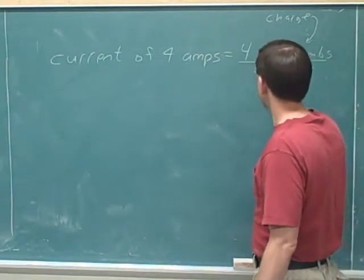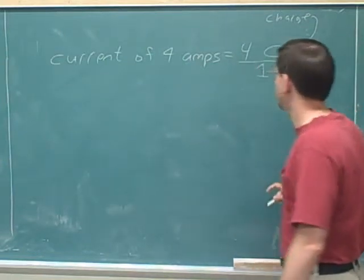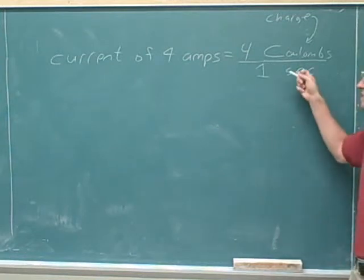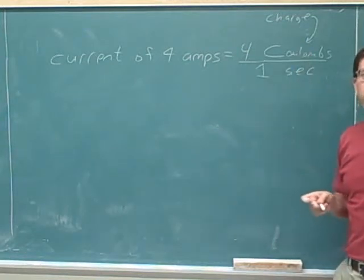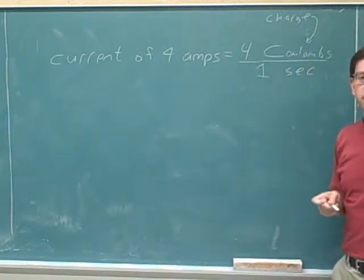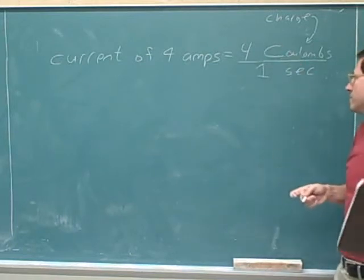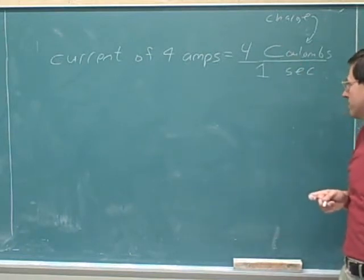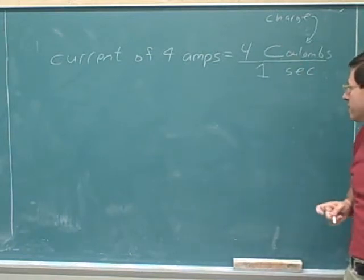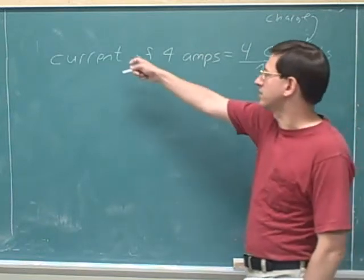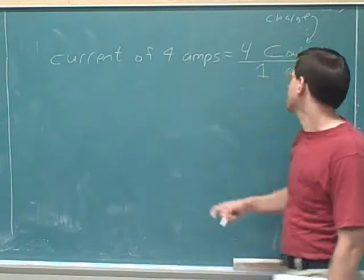We can combine these into a single ratio — put a 1 on the bottom. If the current is 4 amps, that means that in one second, 4 Coulombs of charge are being delivered or transferred or passing by this point. So you can clearly see this tells us how quickly the charge is passing.